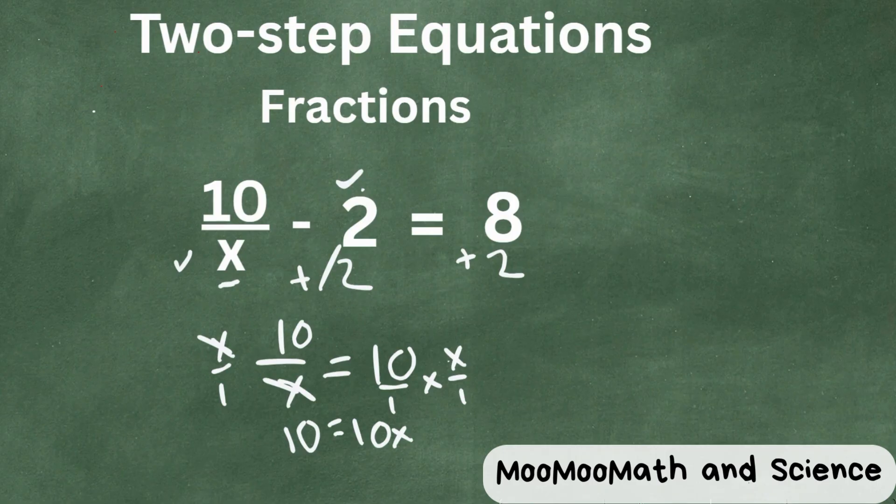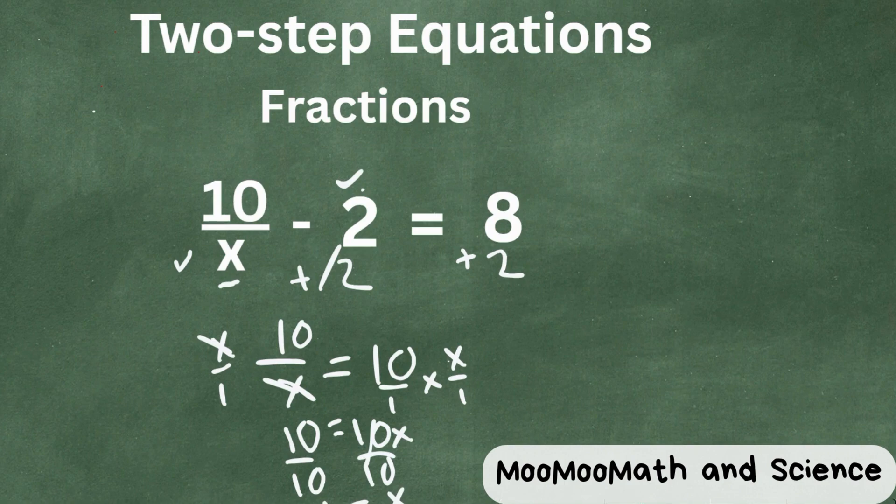So now all we need to do is we have multiplication. We have 10 times x. So let's now divide both sides by 10. And when we do this, these cancel and we were left with x equals 1. So there we go. There's the solution to that problem.